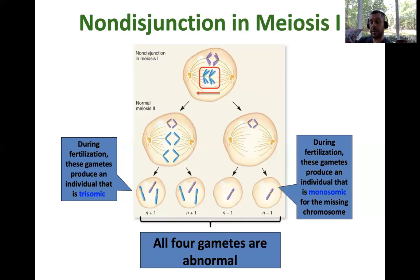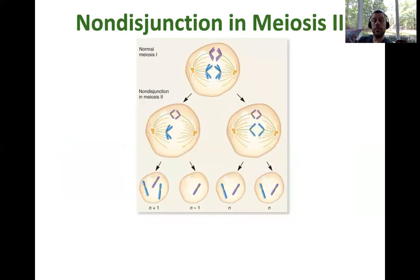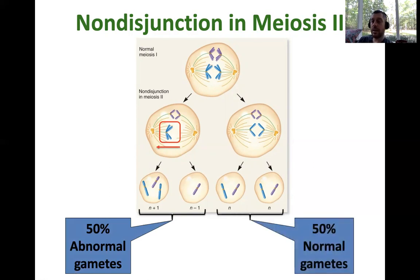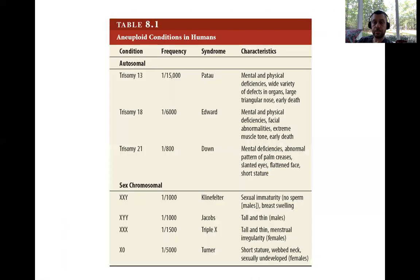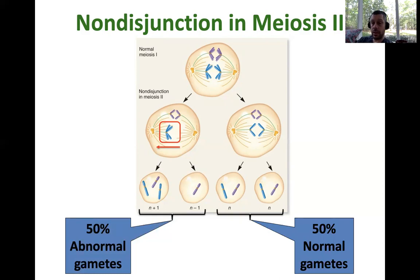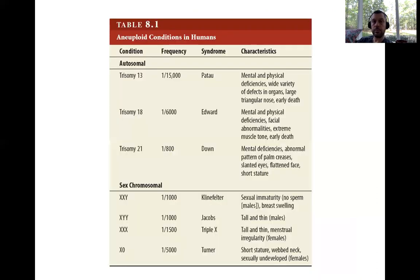Non-disjunction can also happen in meiosis II. In this case, meiosis I happens normally, but in one of the cells in meiosis II, instead of separating the sister chromatids, both are pulled in one direction. Two of the resulting gametes would be normal and two would be unusual — giving 50% abnormal gametes and 50% normal gametes. That's how Down syndrome occurs: in one of the parents a non-disjunction event produces too many chromosomes pulled in one direction, and that happens to be the gamete that gets fertilized.